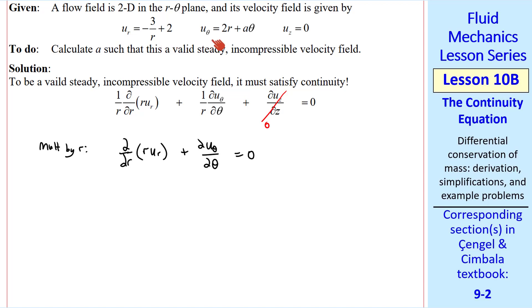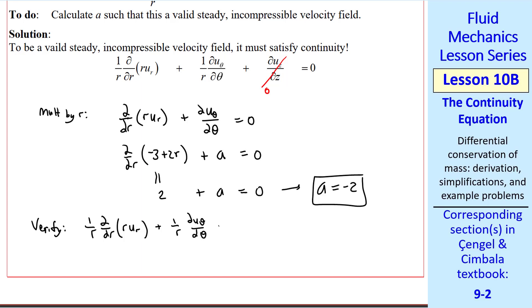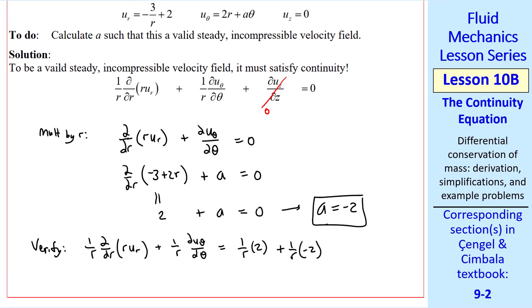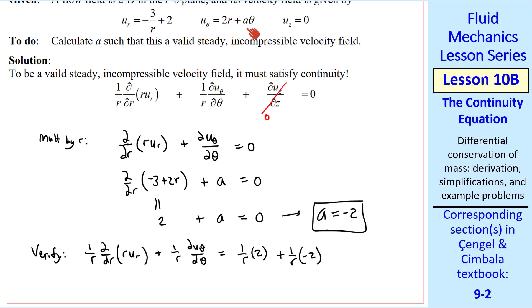From these velocity components, this becomes del del r of negative 3, plus 2 r. And this derivative is just a, so those two terms add up to 0. This partial derivative with respect to r gives us 2, and thus a is minus 2. We verify by writing out the first two terms again. Since this term is 0, and plug in this value of a, we get 1 over r times 2, plus 1 over r times negative 2, where we've plugged in negative 2 for a, which is indeed 0.